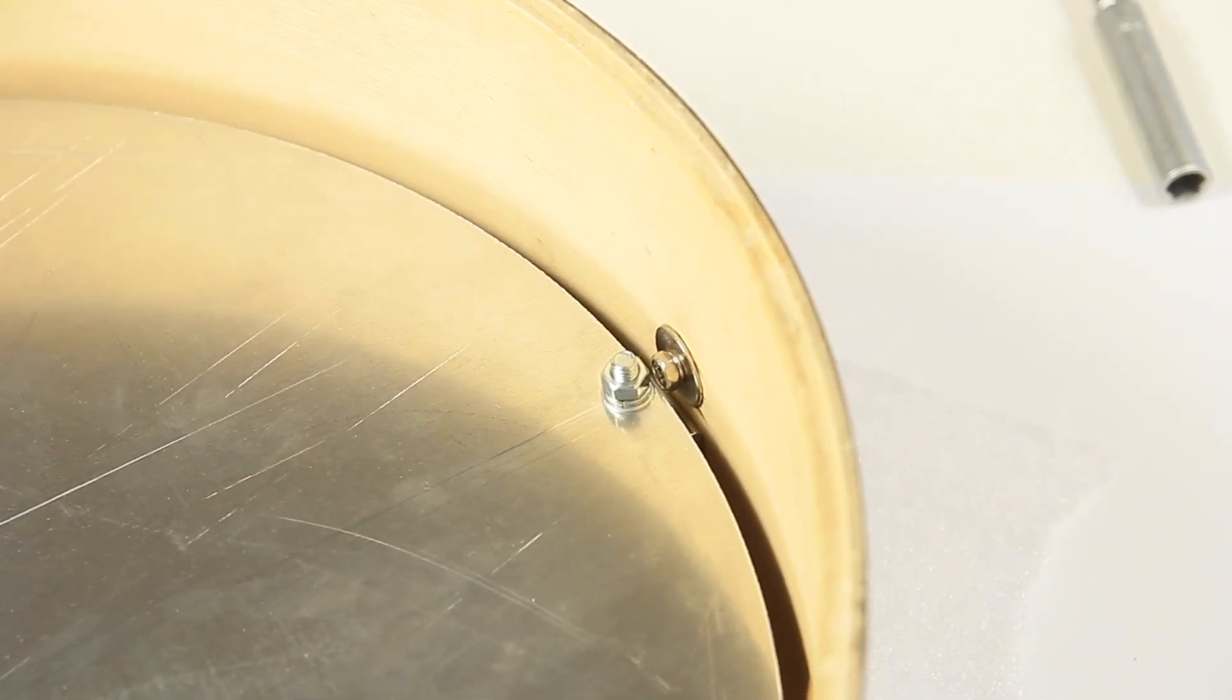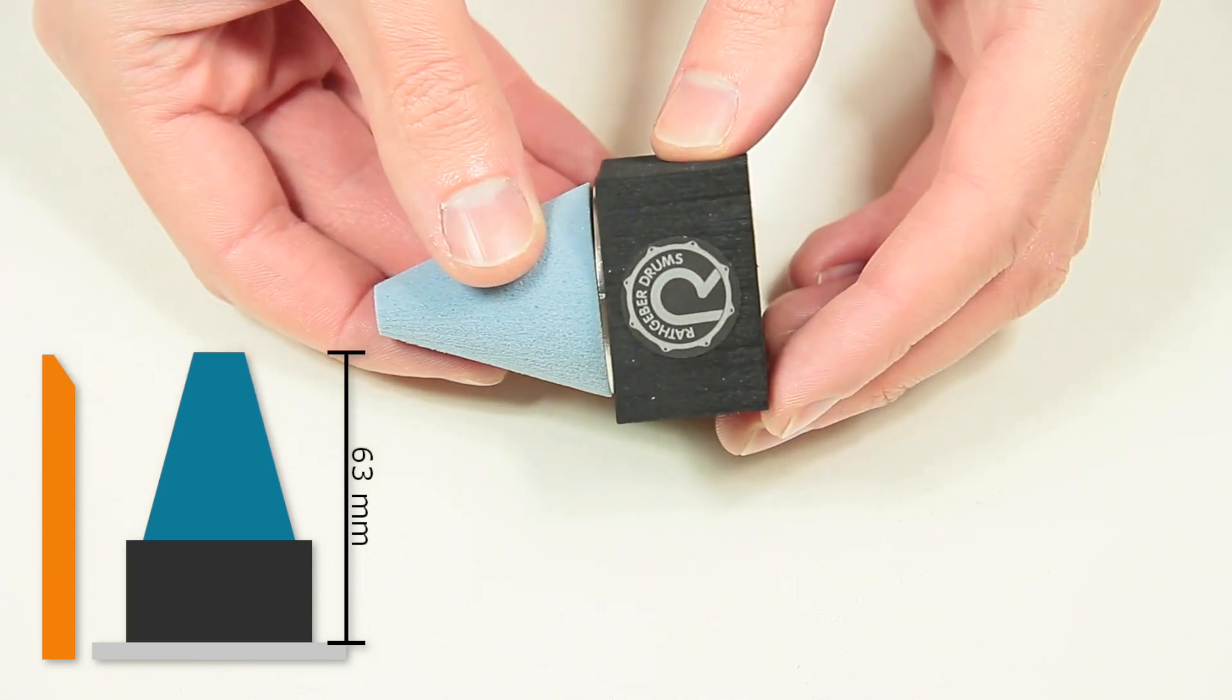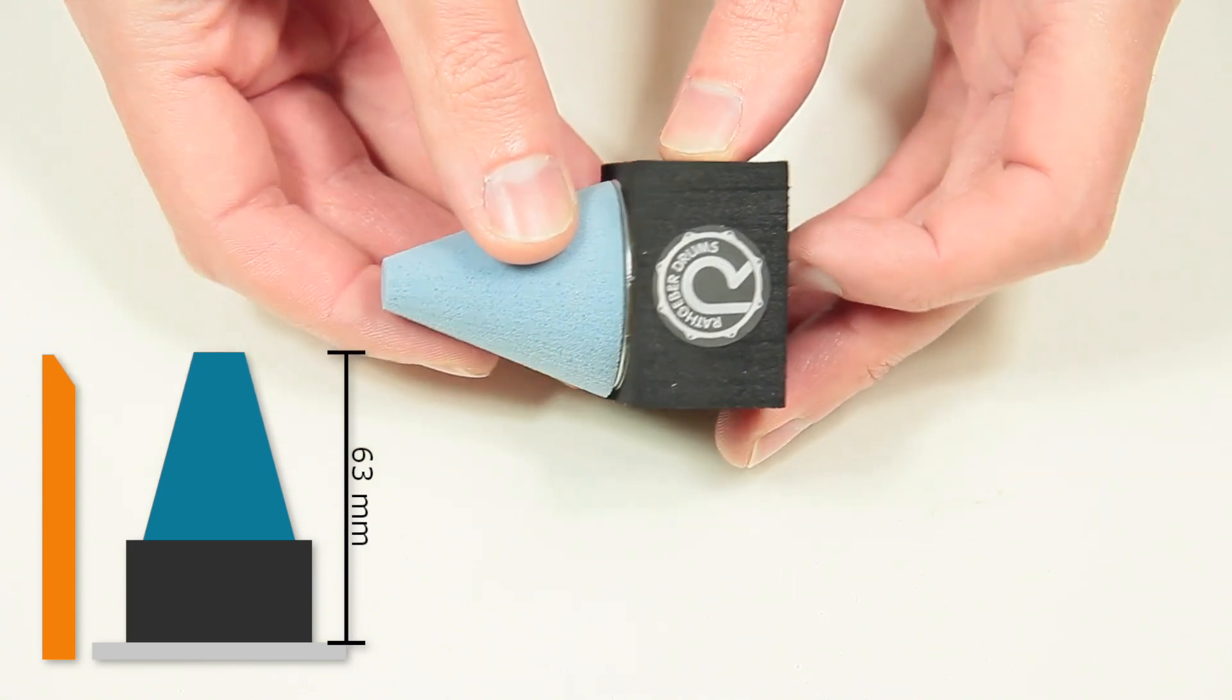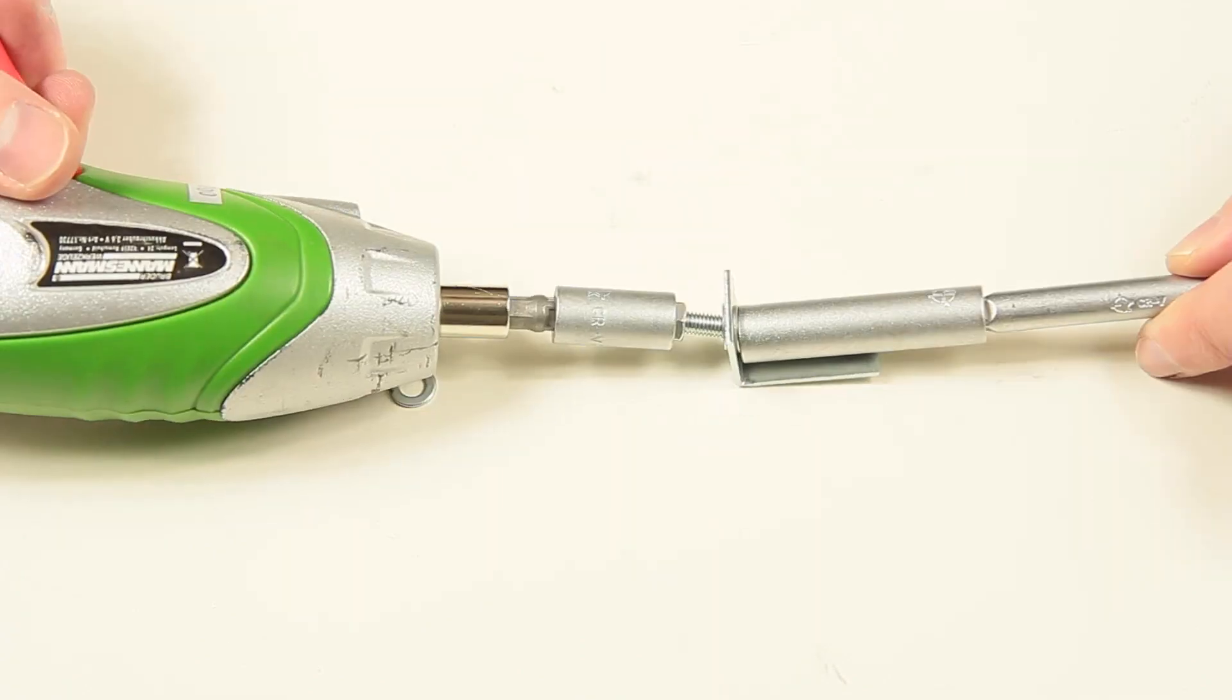The height of the cone, piezo and decoupler is 63mm. This means that the disc has to be around 62mm lower than the bearing edge of the drum. In this case we need a gap between the angle and aluminum disc.